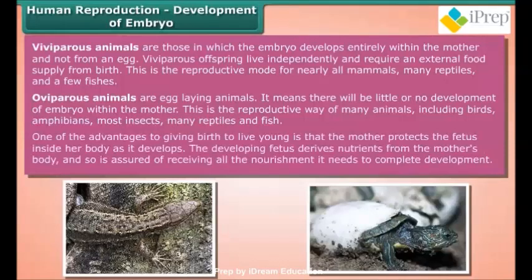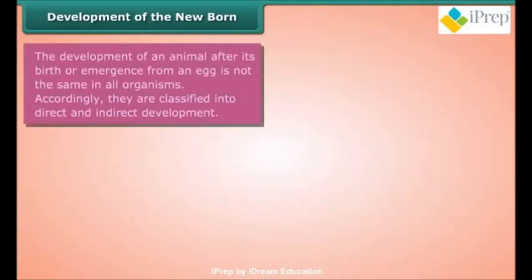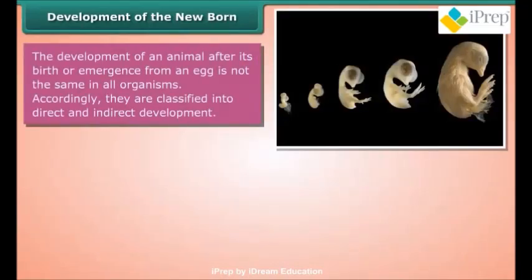The developing fetus derives nutrients from the mother's body and is therefore assured of receiving all the nourishment it needs to complete development. Development of the newborn: The development of an animal after its birth or emergence from an egg is not the same in all organisms; accordingly, they are classified into direct and indirect development.